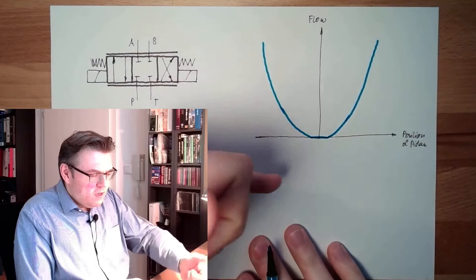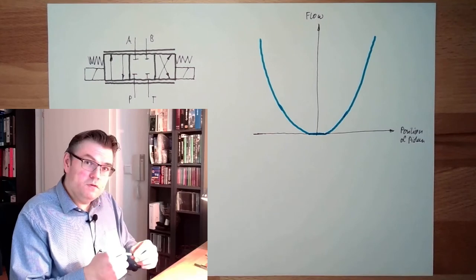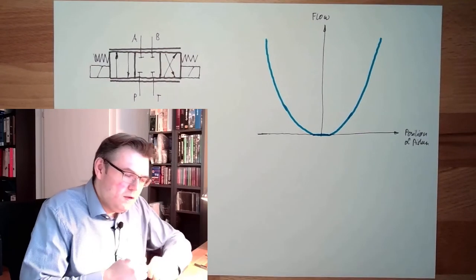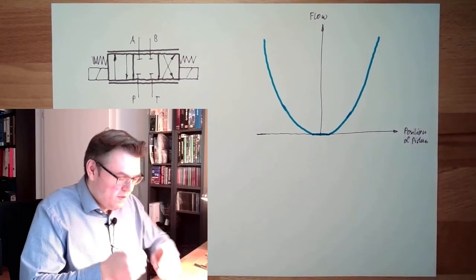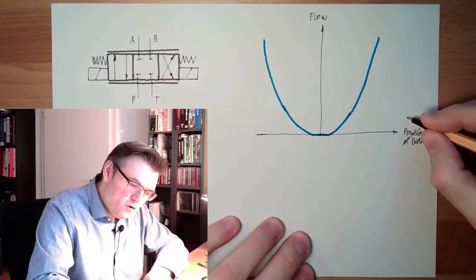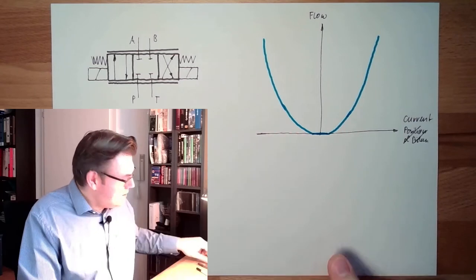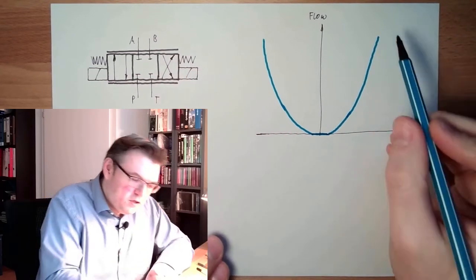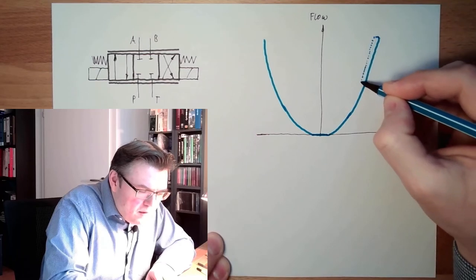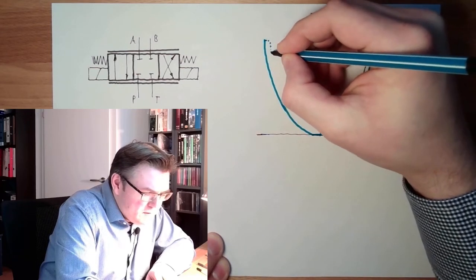If I push it in this direction, the flow will start to rise. However, if I am now reducing the current again, it will stick a little bit. So if I don't use position feedback of the piston, and I'm only using control current, it will rise and when I reduce the current — because there is friction inside — it will drop a little bit and come down. So I do have some hysteresis in this direction and in this direction.